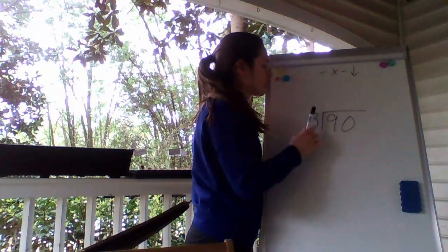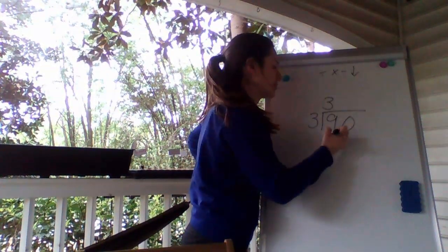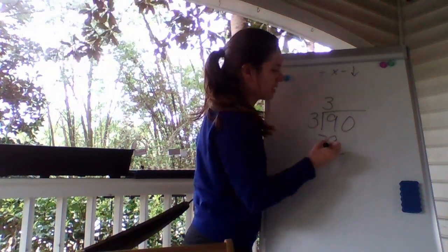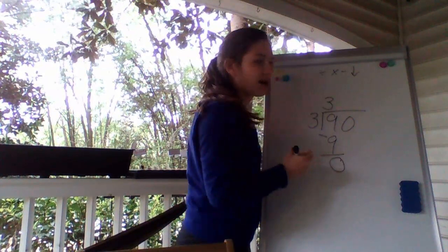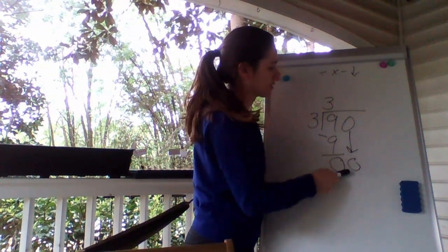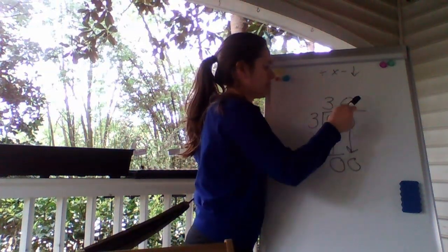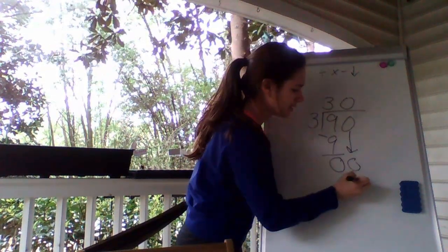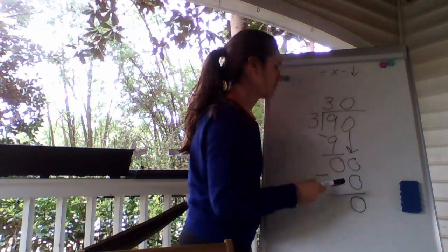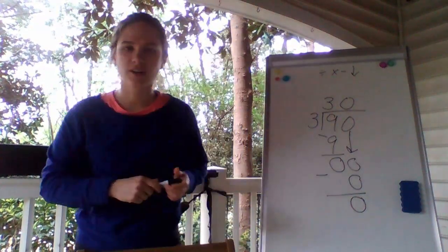9 divided by 3 is 3. 3 times 3 is 9. Subtract equals 0. Now we bring down the 0. 3 goes into 0 how many times? 0. So 0 times 3? 0. So 90 divided by 3 is 30.